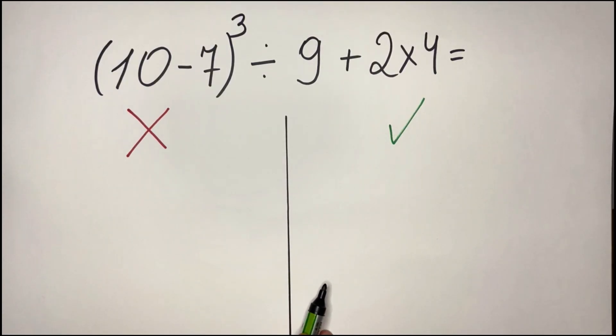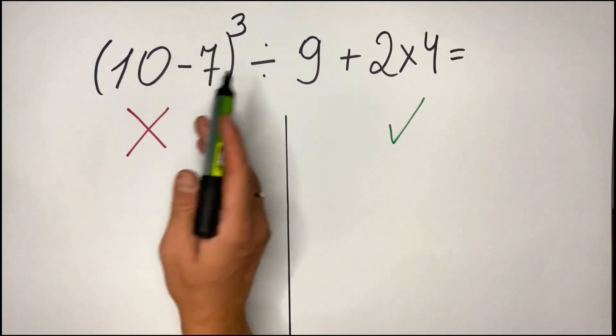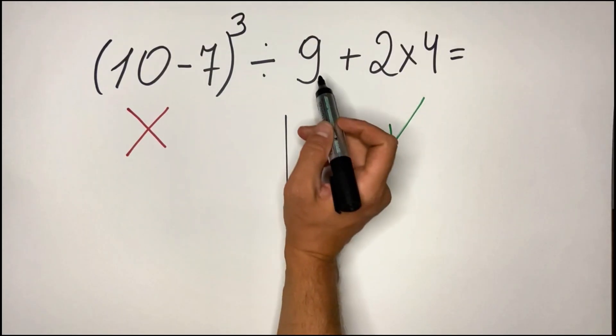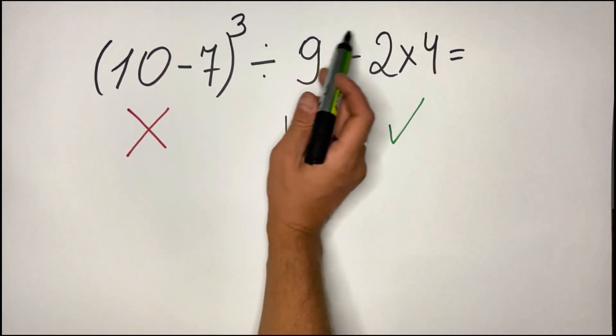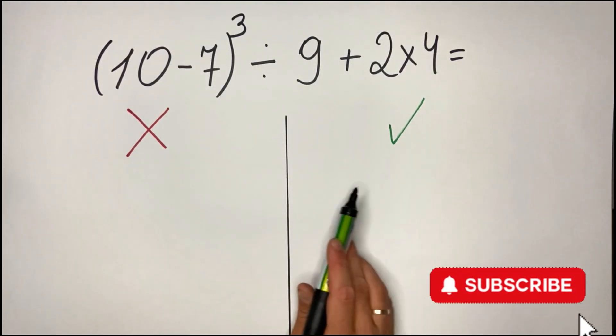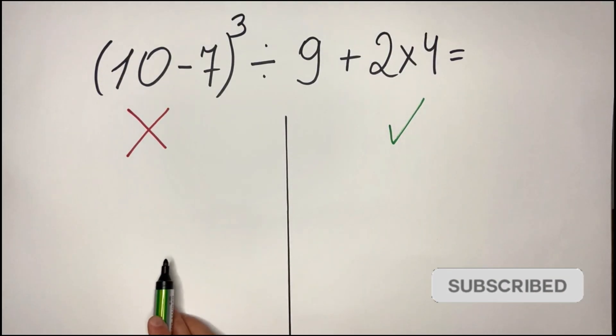So as usual, I'm starting with the most common mistakes. So in this case, the most common mistake will be in this part. So basically, people will not follow the order of operation and will start doing the addition.